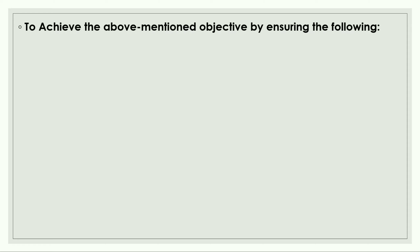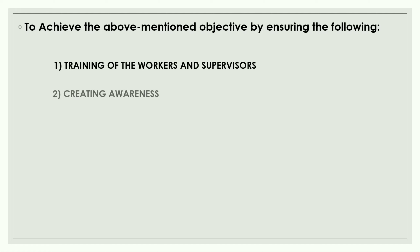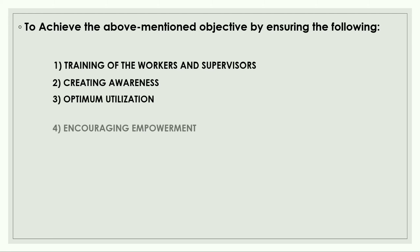To achieve the above objectives, we require the following things: first, better training of workers and supervisors; second, creating awareness about health disorders and safety standards; third, optimum utilization of workforce and equipment; and fourth, encouraging employee empowerment and reducing administrative and indirect work. By providing training, creating awareness about health and safety, optimally utilizing equipment and workforce, and empowering employees, we can achieve the mentioned objectives.